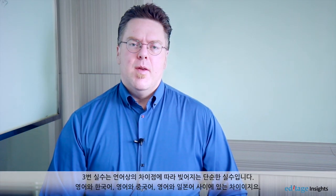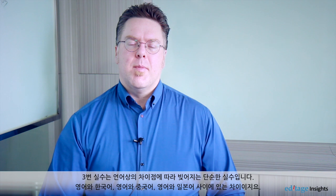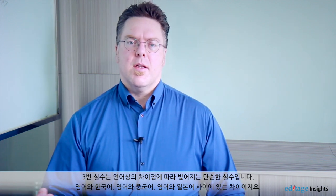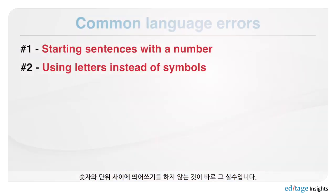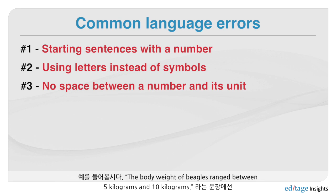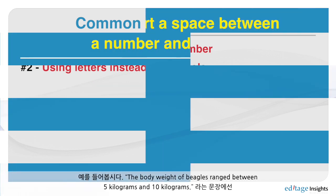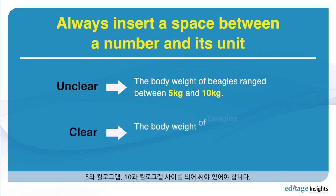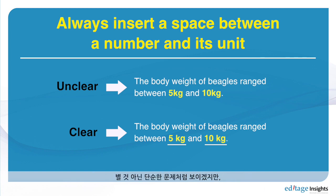Mistake number three deals with the differences between English and Korean, English and Chinese, and English and Japanese — specifically, that there are no spaces between numbers and units in those writing conventions. In English, there needs to be a space. For example, 'the body weight of beagles ranged between 5 kilograms and 10 kilograms' should have a space between '5' and 'kilograms,' and between '10' and 'kilograms.'